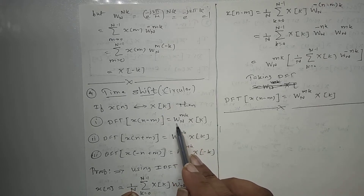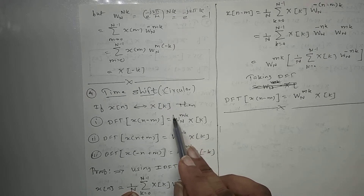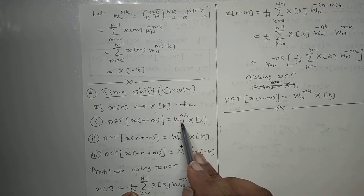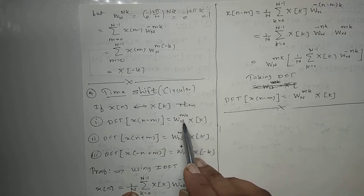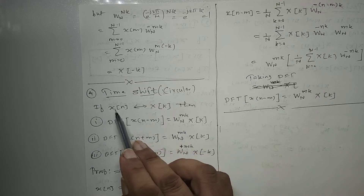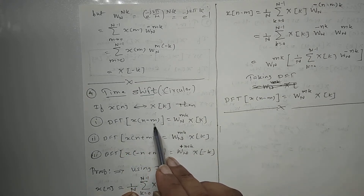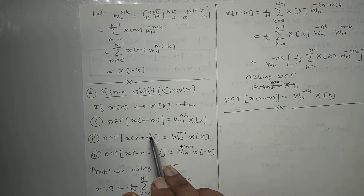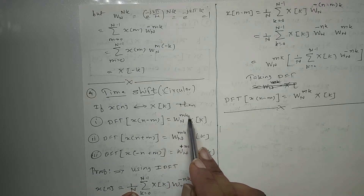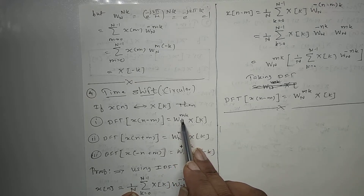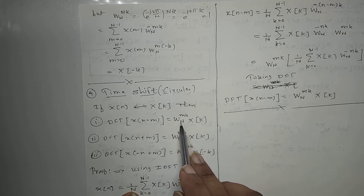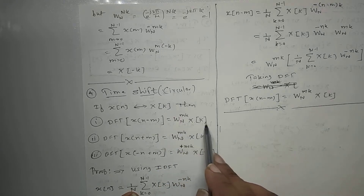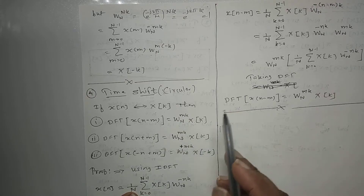This WN term will be written in the form of e raised to j-theta, with magnitude one - so it contributes only phase. So if x[n] is delayed by m in time domain, DFT domain me WN raised to mk multiplication aa jayega. WN raised to mk will contribute only the phase. So if we delay the signal in time domain, its phase will change in the DFT domain.